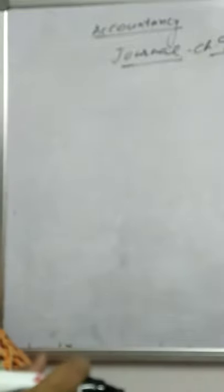Journal — so journal is basically a book of original entry in which transactions are recorded firstly. All transactions are recorded firstly in the journal book, but this is not for all types of business. Only businesses which have limited transactions will maintain journal books.